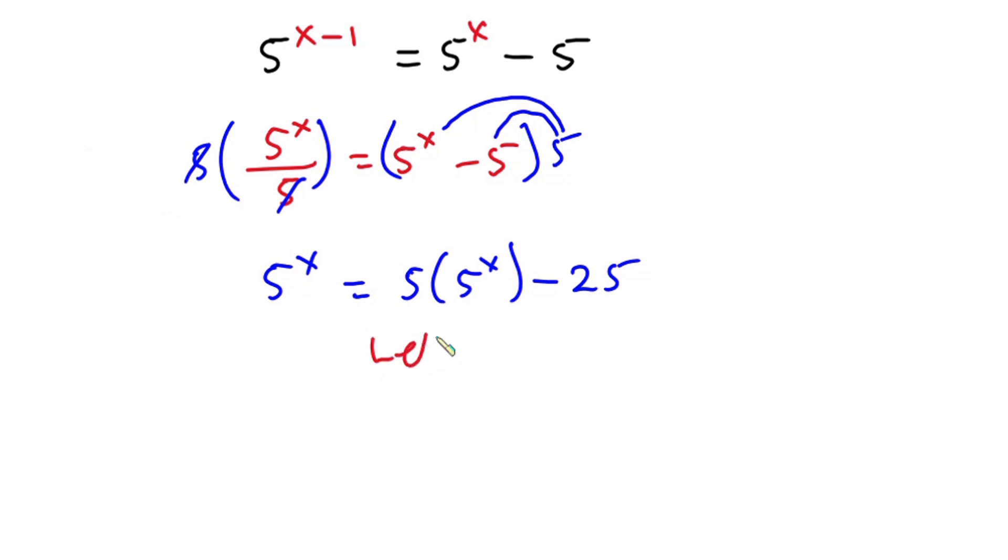Now from here I'm going to let y equal 5 to the power x. So this equation becomes y equals 5y minus 25.